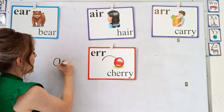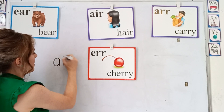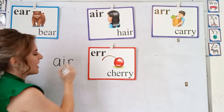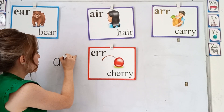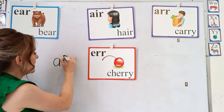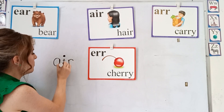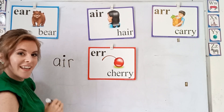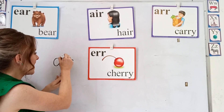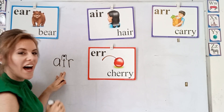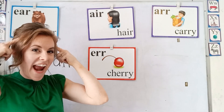You have the A, the I, and the R. And you can pretend this is a little person, and it has a lot of hair.